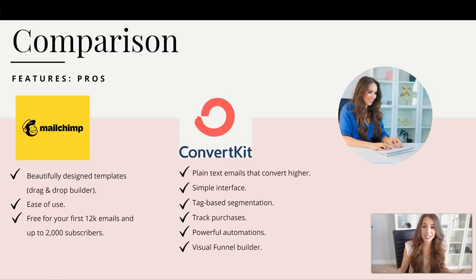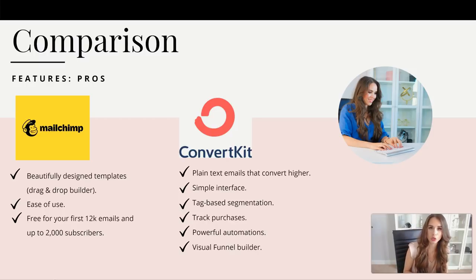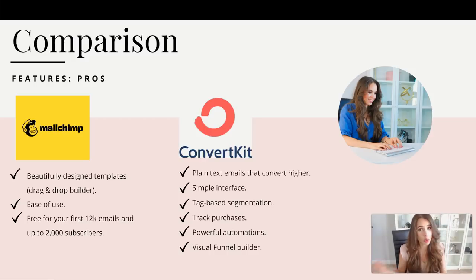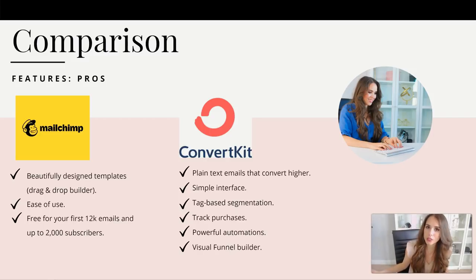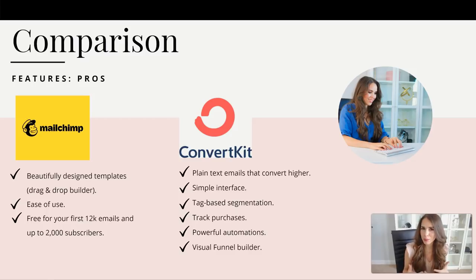ConvertKit has the visual funnel builder, which is beautiful and great for automations and sequences, but there's also global automations — something you don't see in a lot of tools. This allows you to say, across the board, whenever someone is added to a specific sequence and they also have this tag, unsubscribe them from another sequence, put them on an onboarding sequence, or send them a 15% off discount. All these things make your email marketing way more profitable.